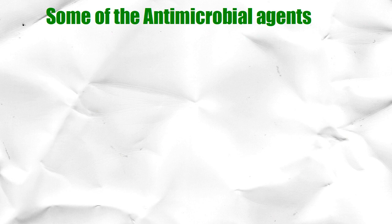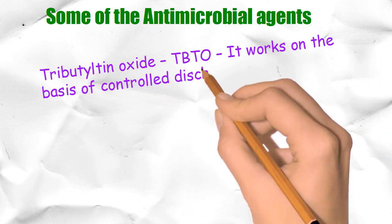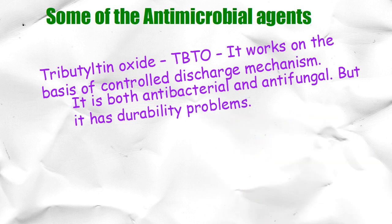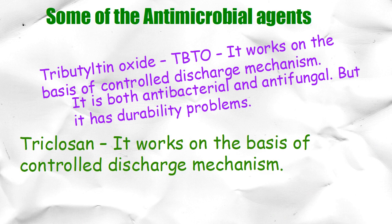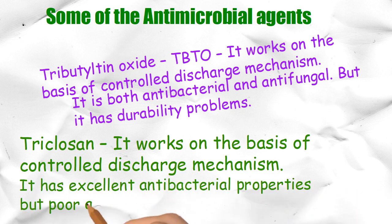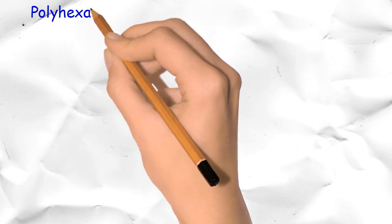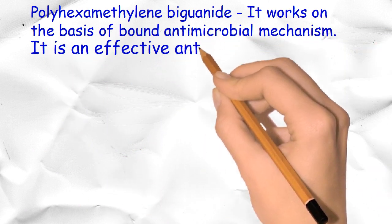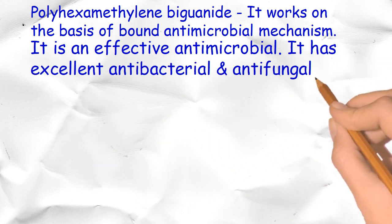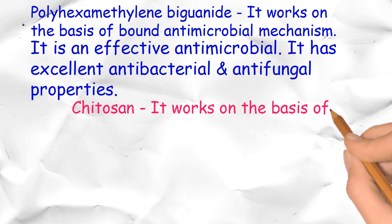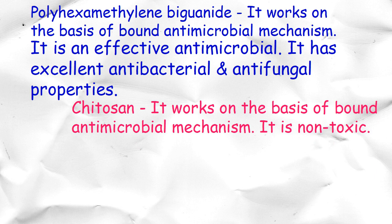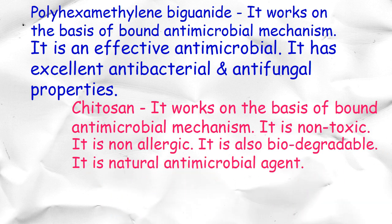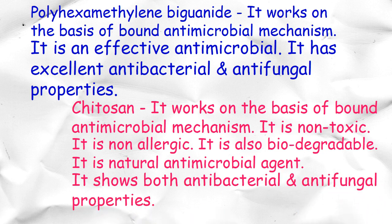Some of the antimicrobial agents: Tributyltin oxide (TBTO) works on the basis of controlled discharge mechanism. It is both antibacterial and antifungal, but has durability problems. Triclosan works on the basis of controlled discharge mechanism and has excellent antibacterial properties but poor antifungal properties. Polyhexamethylene biguanide (PHMB) works on the basis of bound antimicrobial mechanism and is an effective antimicrobial with excellent antibacterial and antifungal properties. Chitosan works on the basis of bound antimicrobial mechanism. It is non-toxic, non-allergic, biodegradable, and a natural antimicrobial agent, showing both antibacterial and antifungal properties.